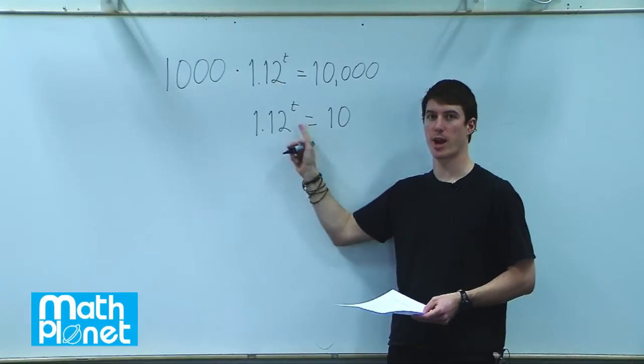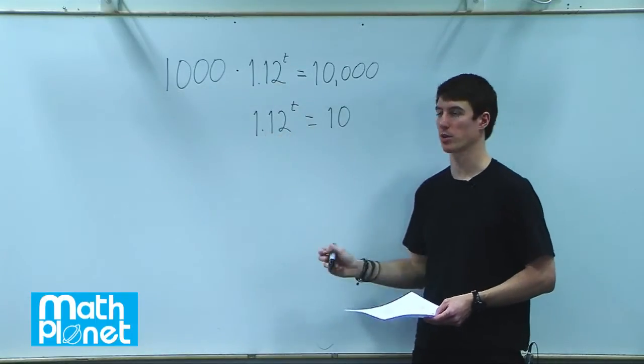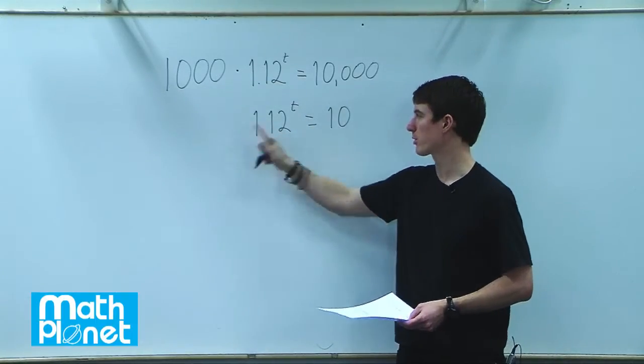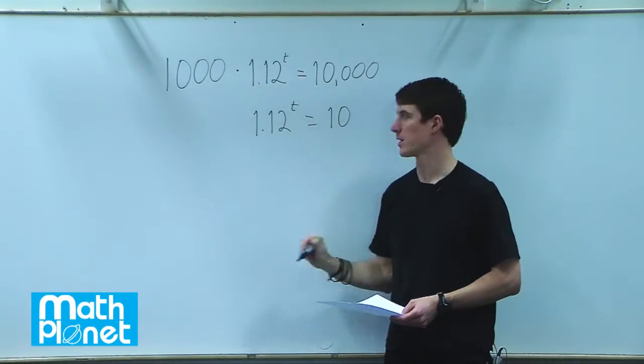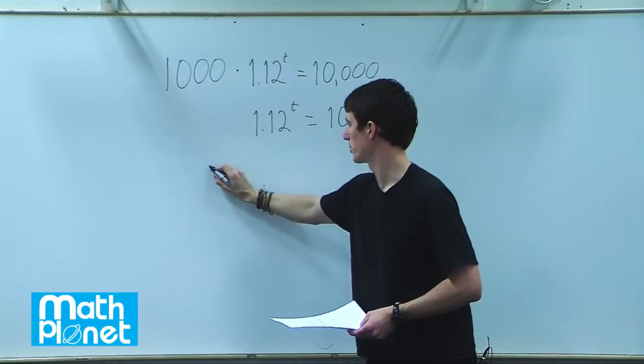But now we need to stop and think how we're going to get this t down. We're going to use our logarithm trick. If we take the logarithm of both sides, then we can take the t and put it out in front. It's a nice little trick with logarithms. So we'll do that now.